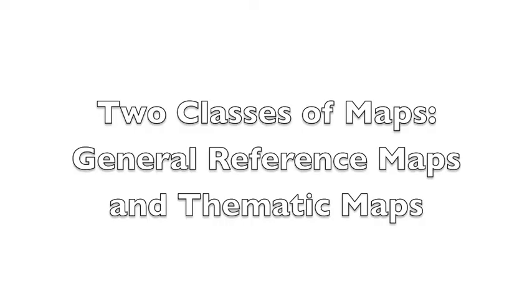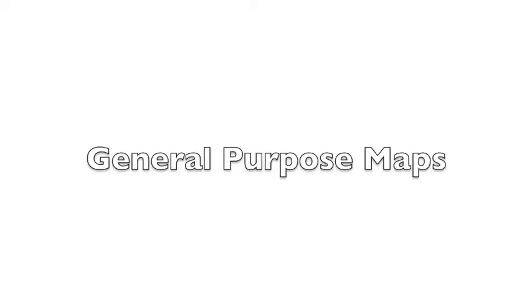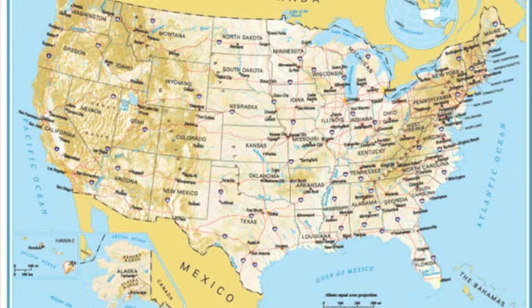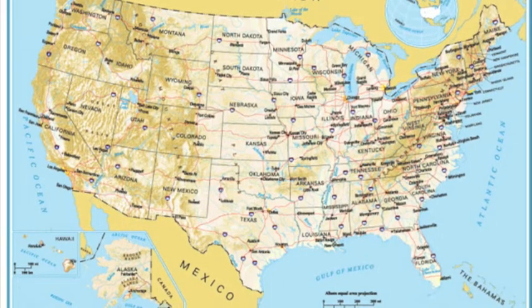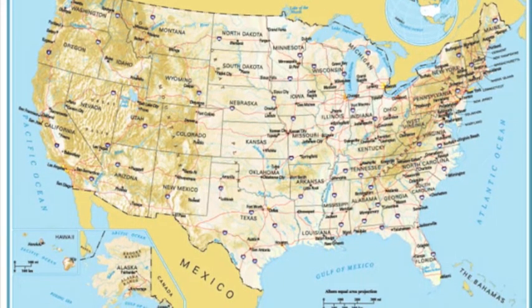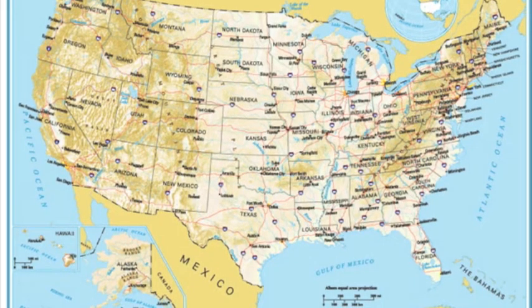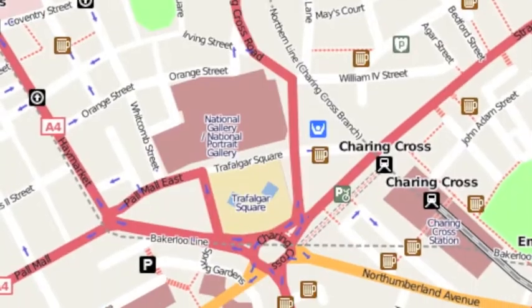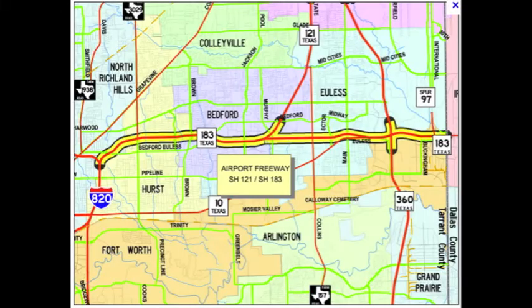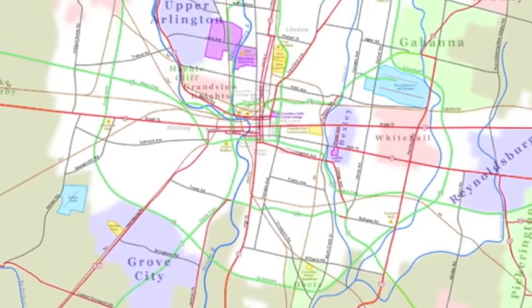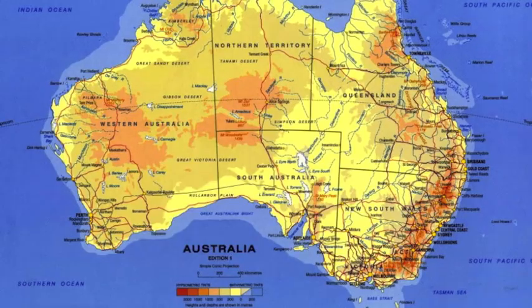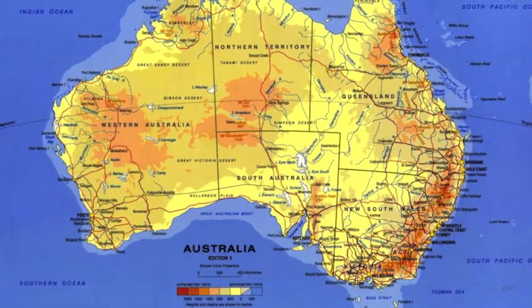Our first class of maps are what we call general purpose maps, also known as reference maps or location maps. They show the natural and human features of a place without any analysis. We don't analyze or interpret anything on these maps. Examples include street maps and highway maps — these are general reference maps that show the location of places and the features of an area.